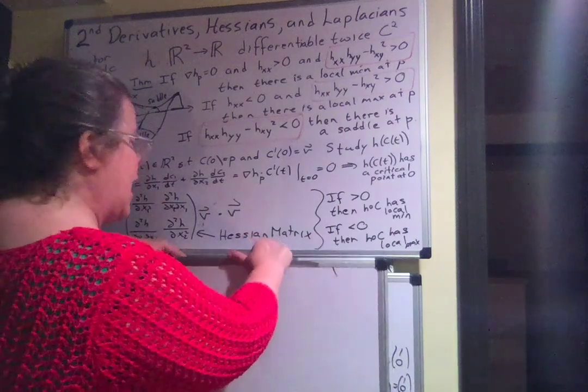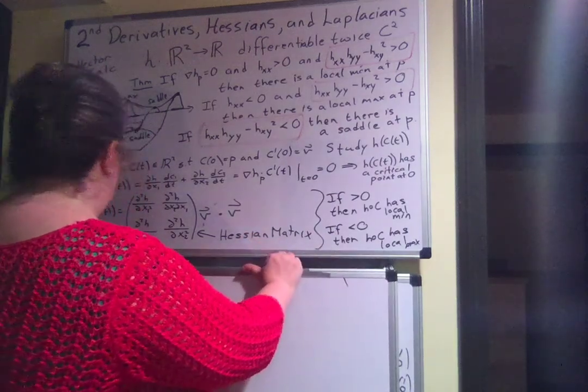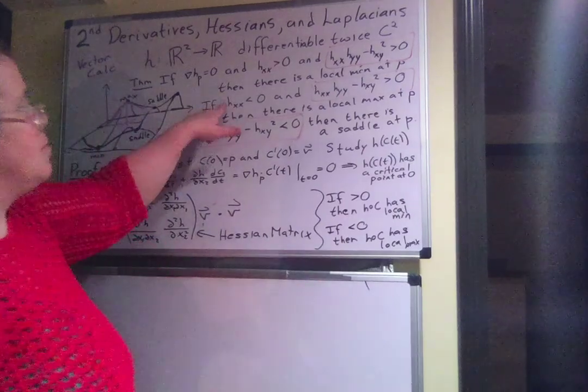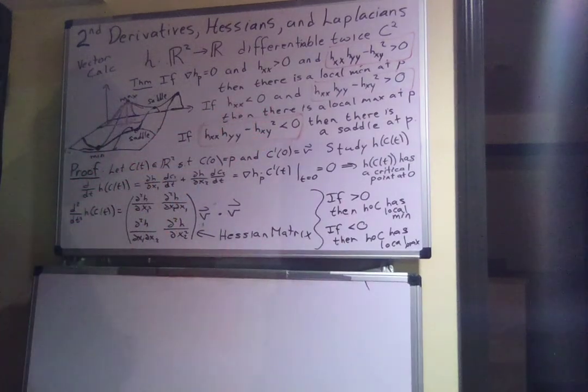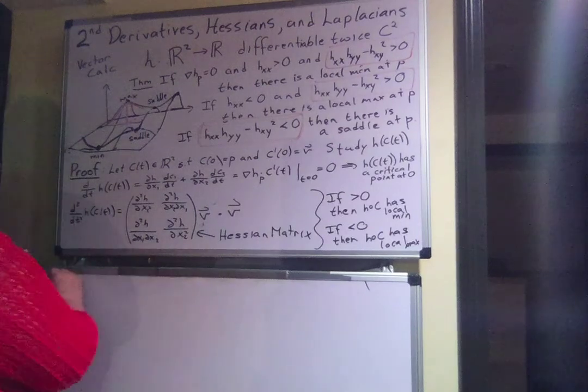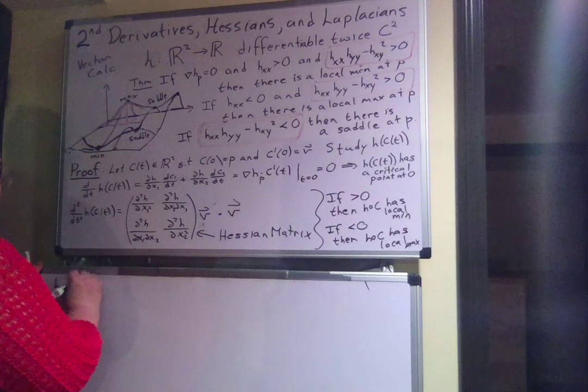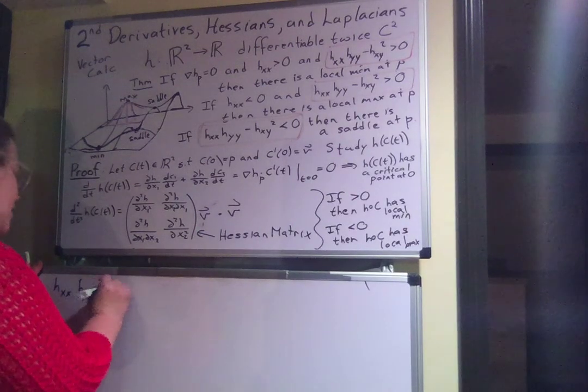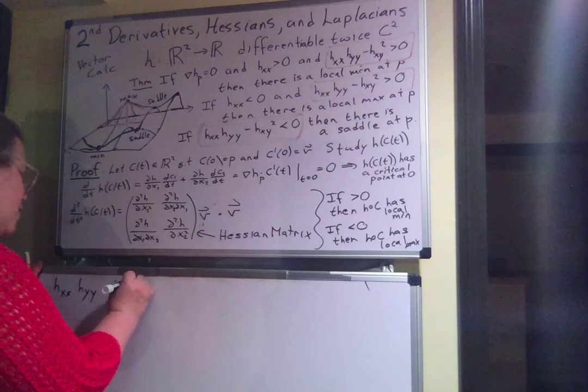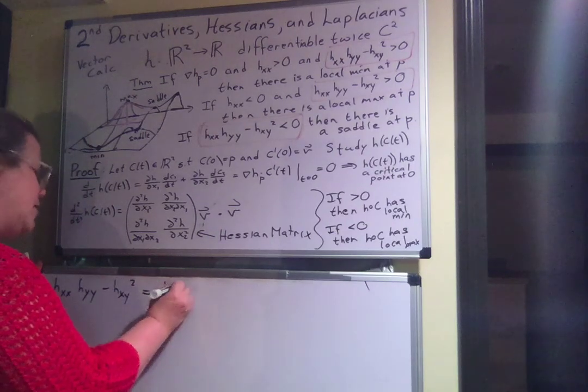So let's study that on a new board because we're still going to have to study this part. This condition here, HXX HYY minus HXY squared is equal to the determinant of the Hessian.